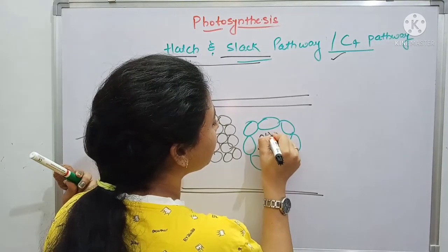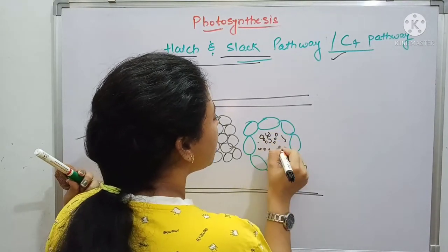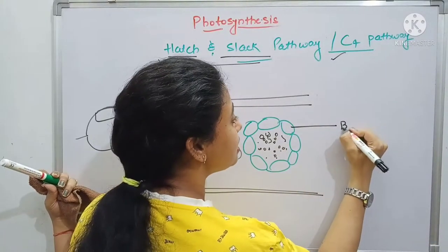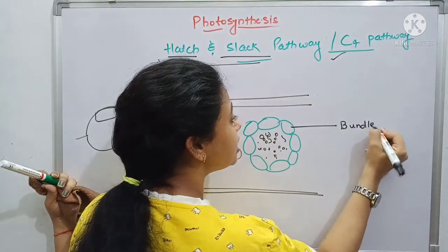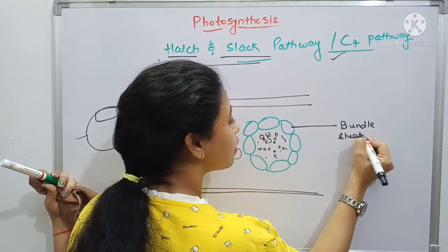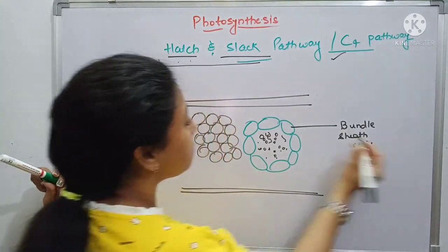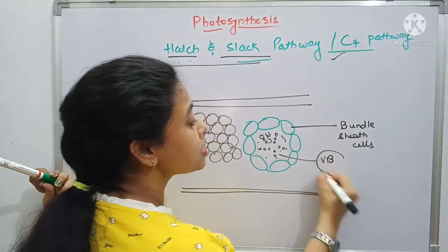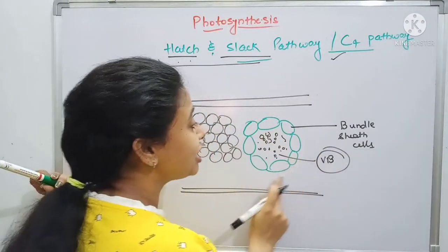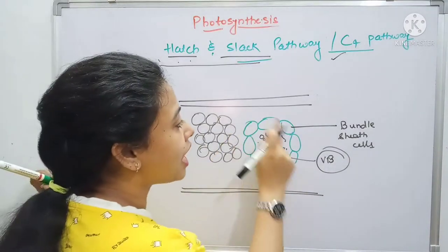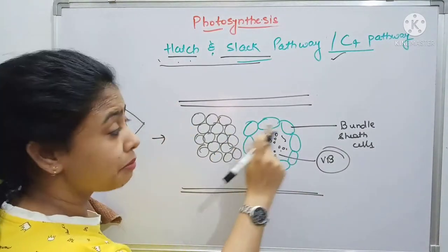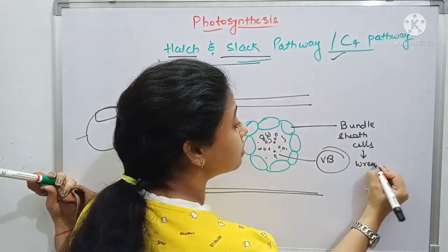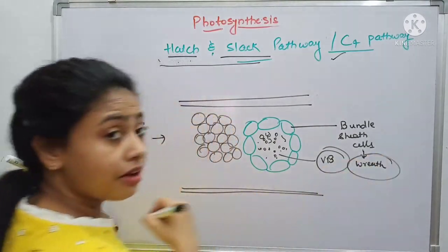This is the xylem and phloem. This large cell is known as the bundle sheath cells, because it makes a sheath around this vascular bundle. They make a sheath around this and they make a garland-like structure. That is why it is also called a 'wreath'.